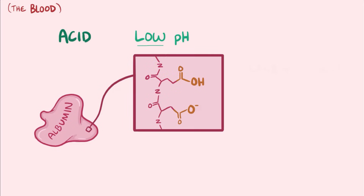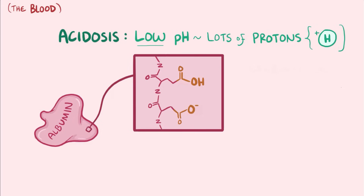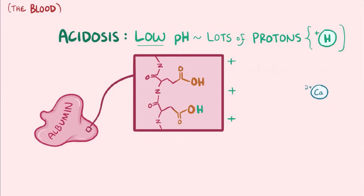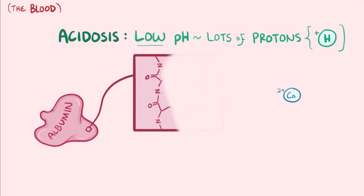When there's a low blood pH, or acidosis, there are lots of protons or H+ ions floating around, and a lot of those COO- groups pick up a proton and become COOH. More COOH groups means that albumin generally becomes more positively charged, and since calcium is positively charged, these two repel each other, which decreases bound calcium and increases the proportion of free ionized calcium in the blood.